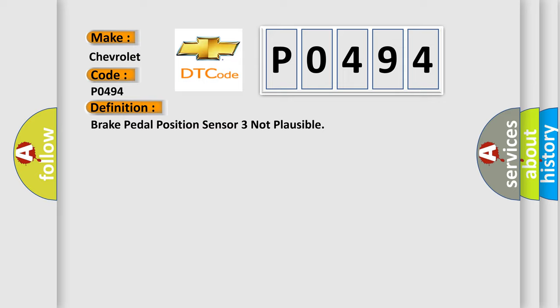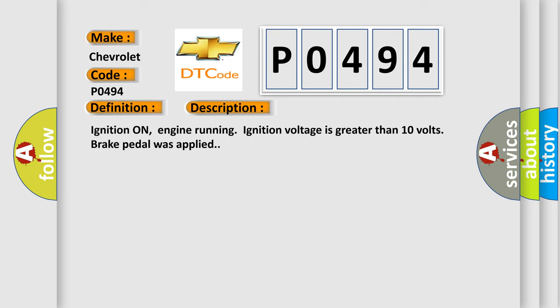And now this is a short description of this DTC code. Ignition on, engine running, ignition voltage is greater than 10 volts, brake pedal was applied.